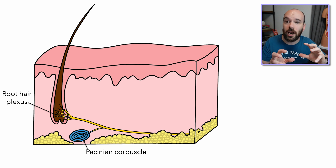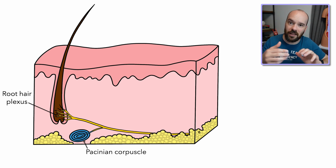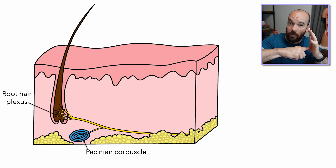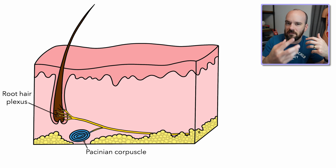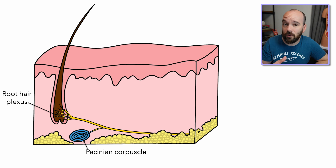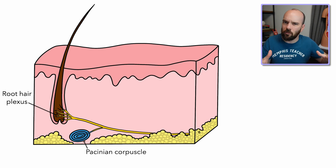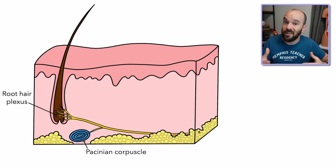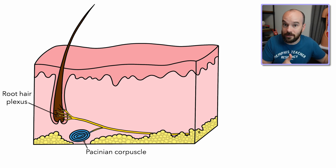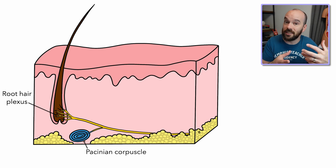Pacinian corpuscles are fast adapting. The difference between slow and fast adapting receptors is this: slow adapting receptors continue sending signals even if a stimulus has been present for a long time, while fast adapting receptors only send signals at the beginning of a stimulus and then stop. For example, if you have deep pressure on your hand, you'll feel it for a while, but the sensation starts to fade because the Pacinian corpuscles are fast adapting. Another example: when you first get into a hot tub it feels really hot, but after a while your body gets used to it because those thermoreceptors adapted and stopped sending signals.